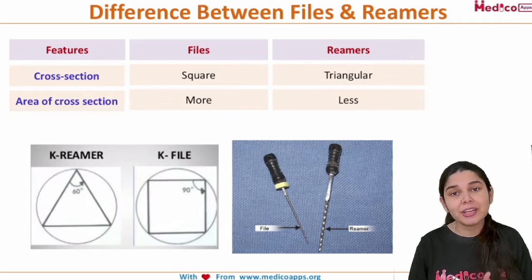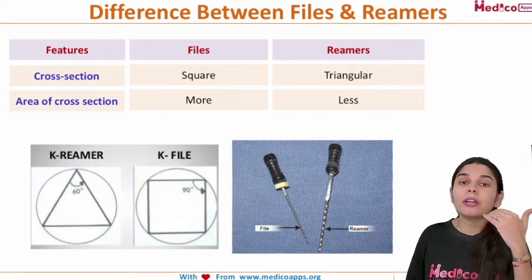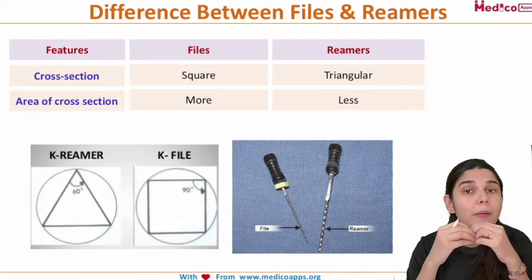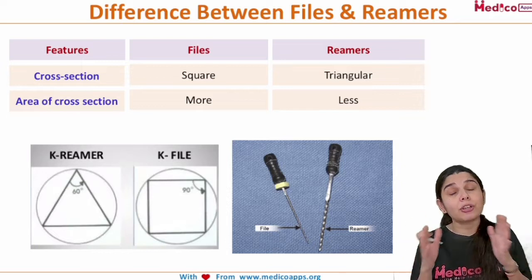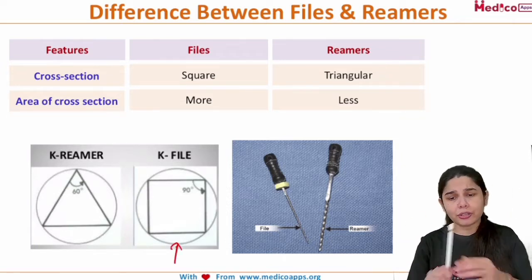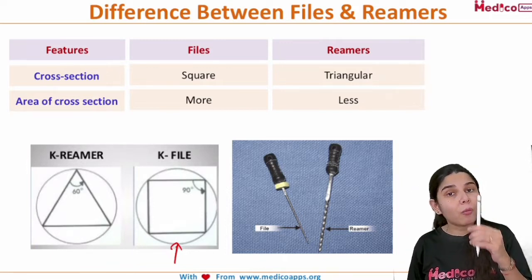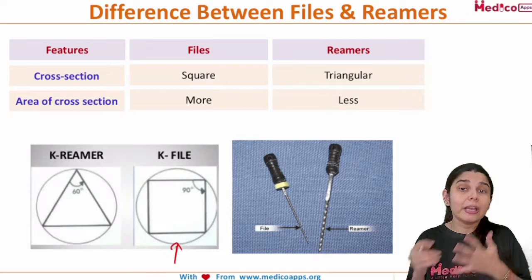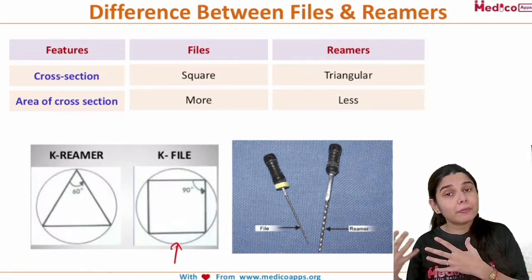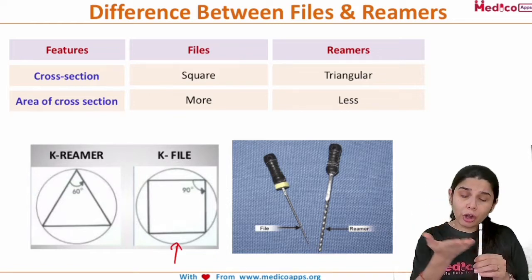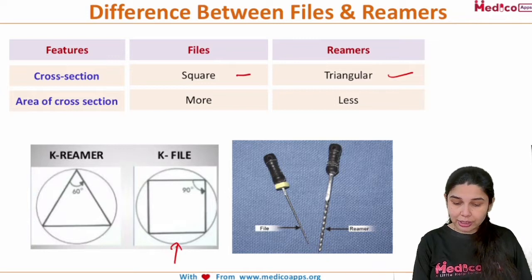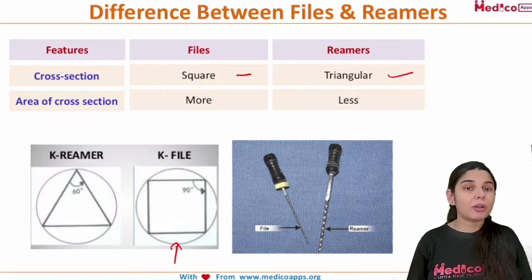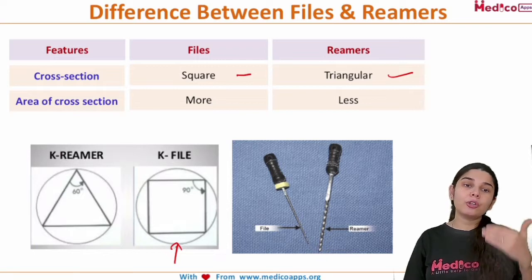Let's start with the first difference: cross section. The cross section refers to how a file or reamer is made. A file is made from a wire which has a square cross section — if you cut the wire, that cross section is square. Whereas when making the reamer, the cross section of that wire will be triangular. This is the first important and basic difference, which is usually asked by the examiner.